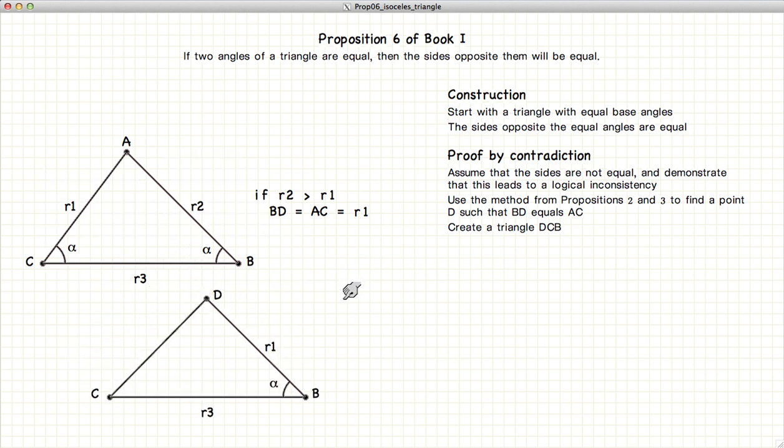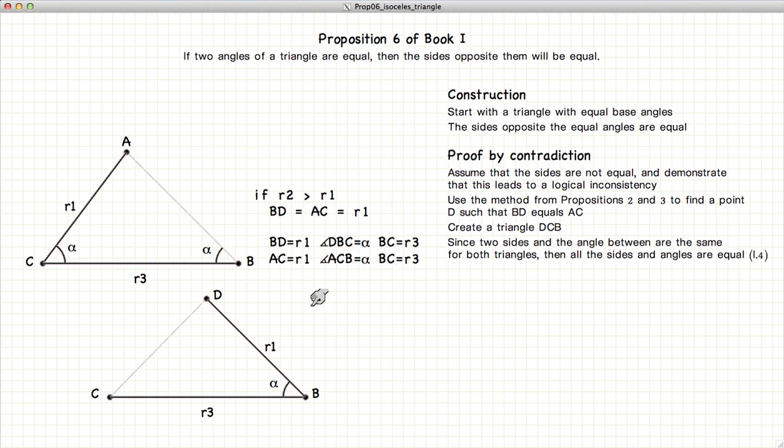Now if we look at the two triangles, we have a side angle side R1 alpha R3 R1 alpha R3. Now of course,